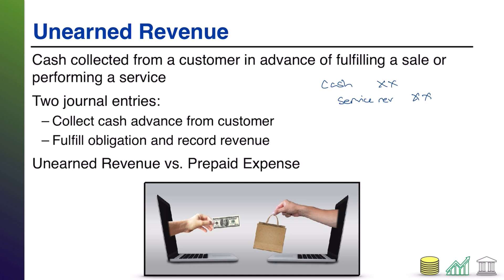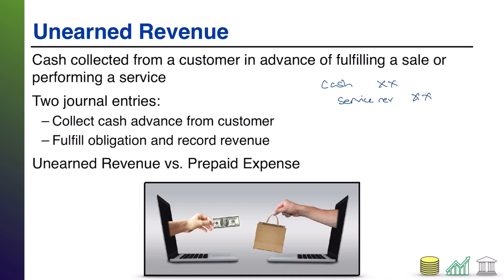Unearned revenue is a little bit different because in an unearned revenue situation you are still getting paid, but you're getting paid before you've done the job. That means you're not allowed to recognize service revenue — you can't recognize revenue if you haven't done the job. Instead, you have to record a liability, and the name of that liability — because it is basically revenue that has not been earned yet — is called unearned revenue.